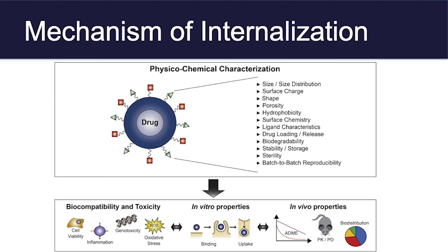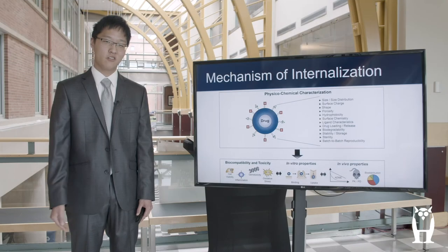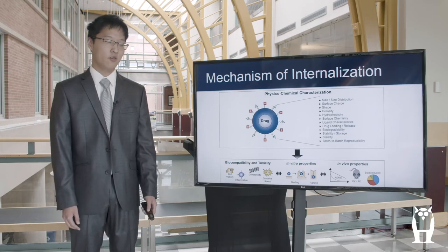There are a variety of physical and chemical properties, such as size, shape, charge, and all of these listed here, that in turn affect biocompatibility and toxicity, and also whether the nanoparticle is taken up by the cell or not. These in turn affect the clinical and preclinical trials involved in eventually creating a nanotherapeutic for cancer treatment.